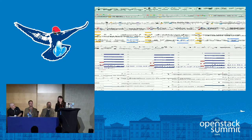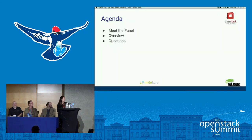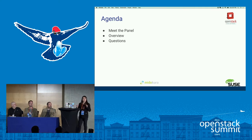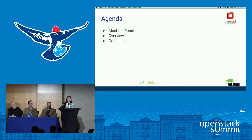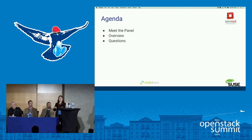My name is Susan Wu. I'm the Director of Technical Marketing at Mitakura. Mitakura is a global startup with about 50 people, with locations in Tokyo, Barcelona, and San Francisco. We provide network virtualization overlay — we're the plugin for OpenStack Neutron, the top contributor to OpenStack Neutron Core, and the founder of the Courier Container Project.